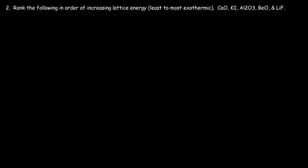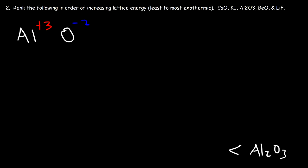Now let's work on a ranking problem: rank the following in order of increasing lattice energy, from least to most exothermic. First, look at the charges. Aluminum has a +3 charge and oxygen has a -2 charge, so aluminum oxide should have the highest lattice energy — it goes last as the most exothermic. Next, we have calcium and beryllium, which both have a +2 charge.